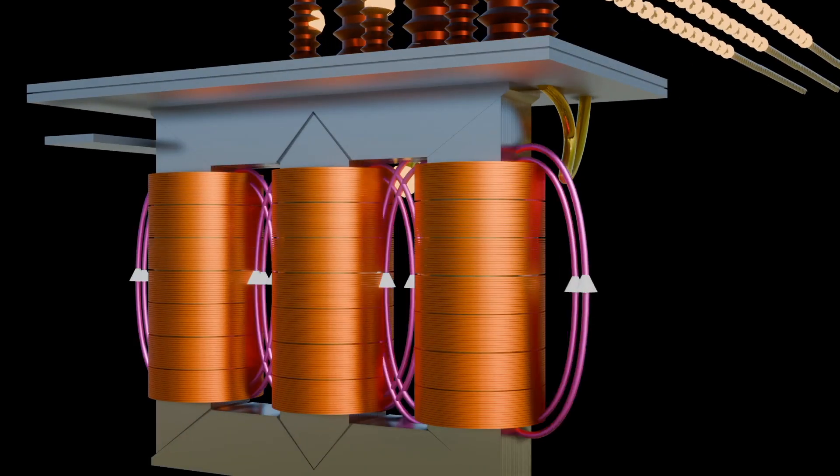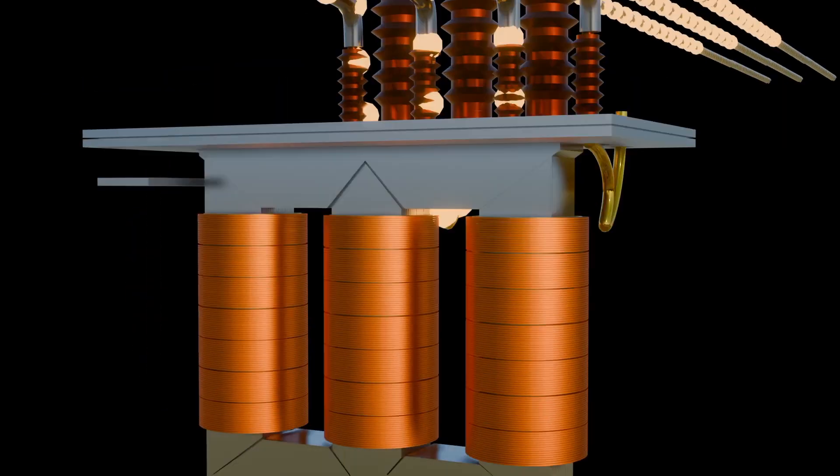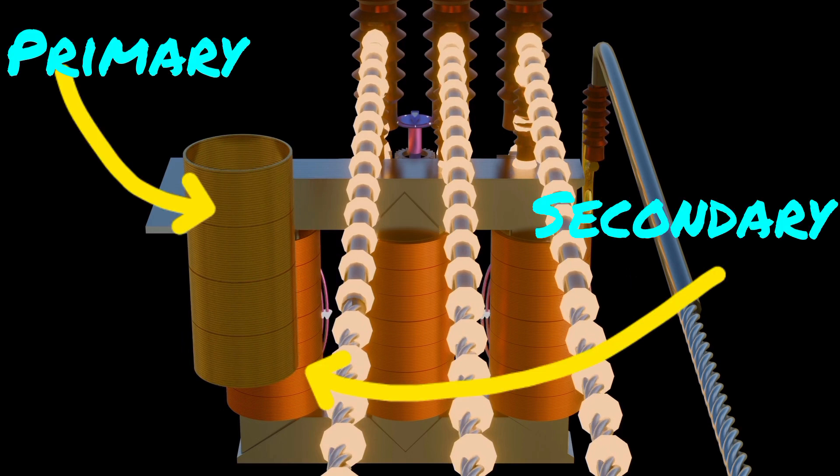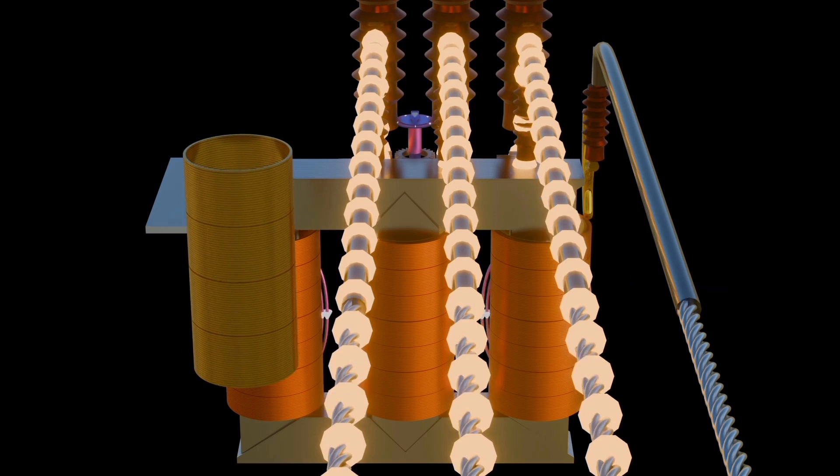In three-phase transformer, there are two sets of windings: primary and secondary windings. Each set consists of three separate windings. For example, three primary windings and three secondary windings. These windings are typically wound around the core in a concentric manner or even sandwiched manner.